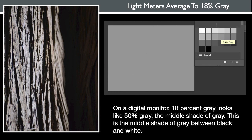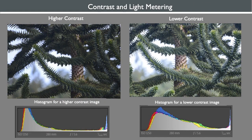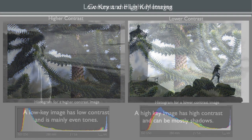High contrast occurs when the difference between the darkest and lightest portions of an image are more extreme — when the shadows are very dark and highlights are very bright. A low contrast image has a tonal range with more gray tones and light shadows and dim highlights. Images with extremely low contrast are considered flat. Notice how the histograms for each image differ, with the higher contrast image having more shadows and less midtones, while the lower contrast image has a more even range of tones.